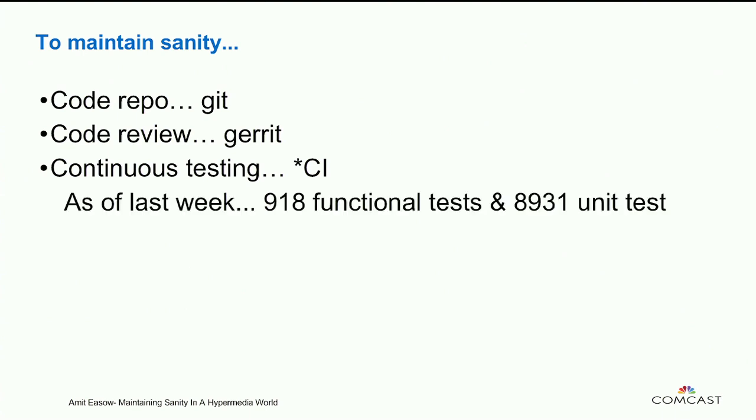So how do you maintain sanity in a hypermedia world? Feedback, feedback, feedback — and extensive testing. The first thing we put in place is a code repo, and we decided to use Git. We made sure that we had extensive code review, and we used a tool called Gerrit. We also put in place a continuous testing infrastructure with a commercial tool. We were successful enough to put together a whole bunch of functional and unit test scripts, and as of last week, we have over 900 functional tests and close to 9,000 unit tests.